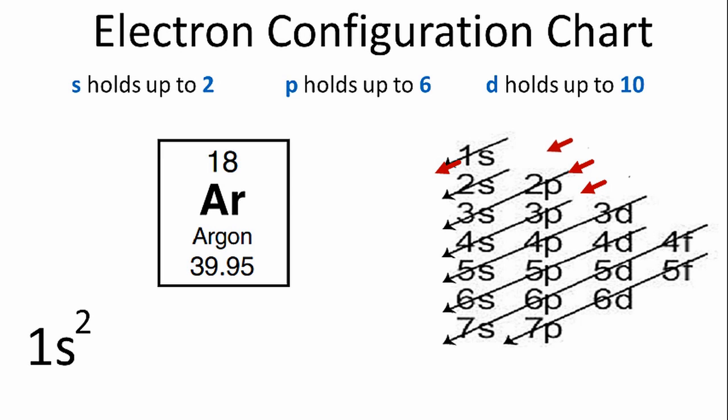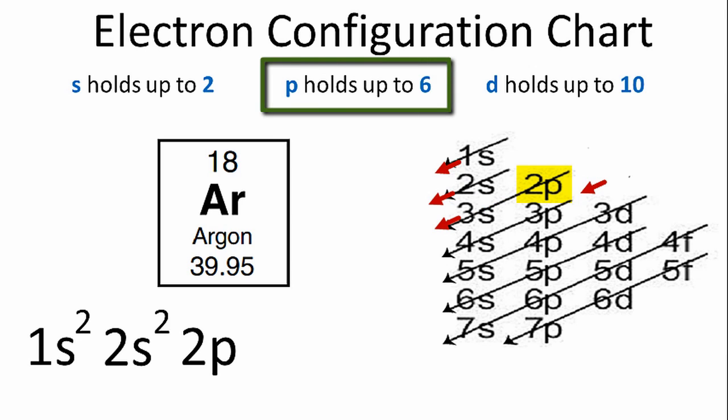We'll go down the next row, we have the 2s. S's can hold 2. And then to the third row, where we start with the 2p. P orbitals can hold up to 6 electrons, so let's put 6 electrons in this 2p orbital. That gives us a total of 10. Again, since argon has 18 electrons, we need to have 8 more to finish the configuration.